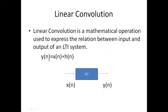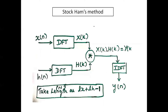Y of n is equal to X of n convolved with H of n, where X of n is the input, H of n is the impulse response, and Y of n is the output of an LTI system. We will study how to find linear convolution using DFT and IDFT method. This method is also called the Stoke-Hams method.